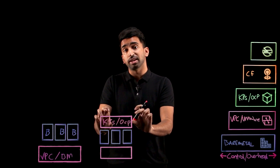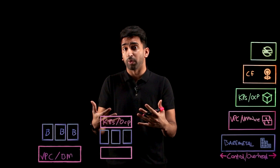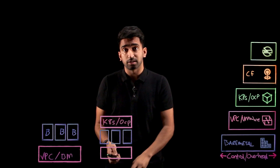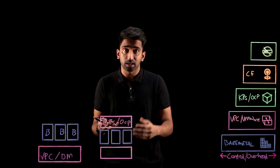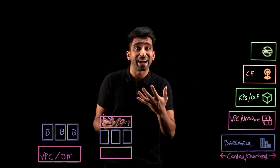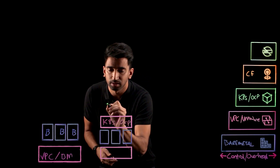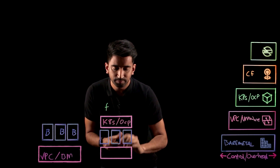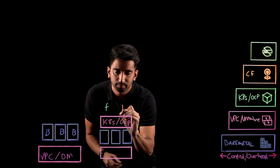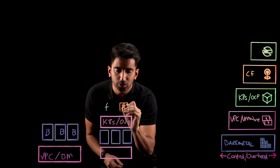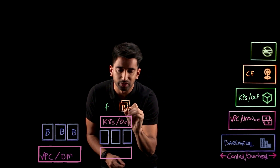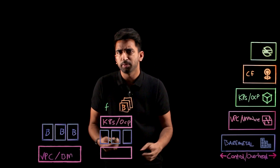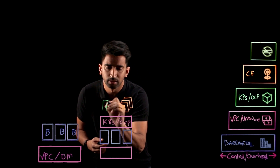On top of this, we can start deploying our containers. Like we mentioned, we have that frontend as well as a backend for that frontend application. For each of those, we want to scale those out, which Kubernetes or OpenShift can handle for us.